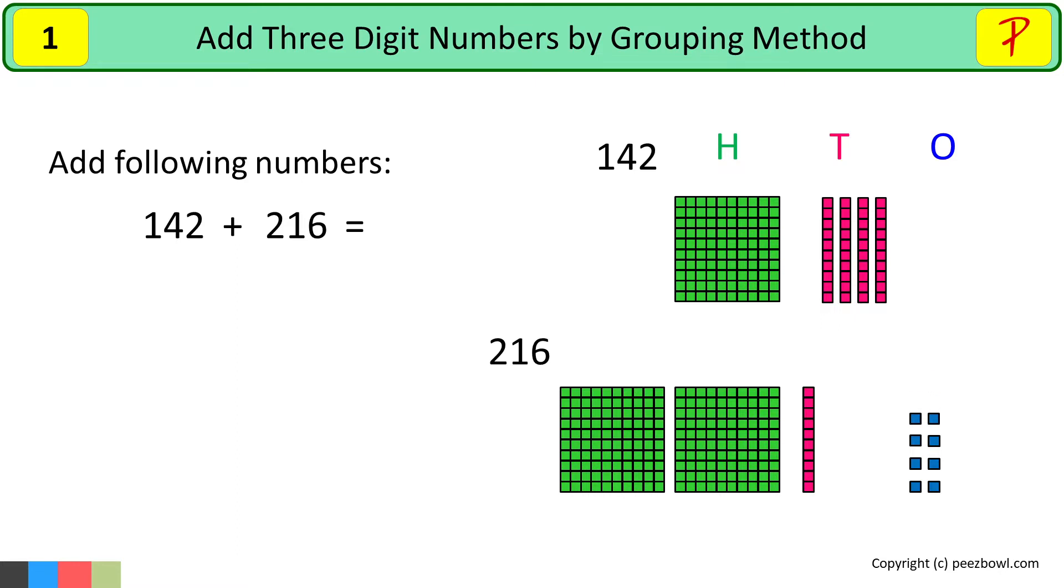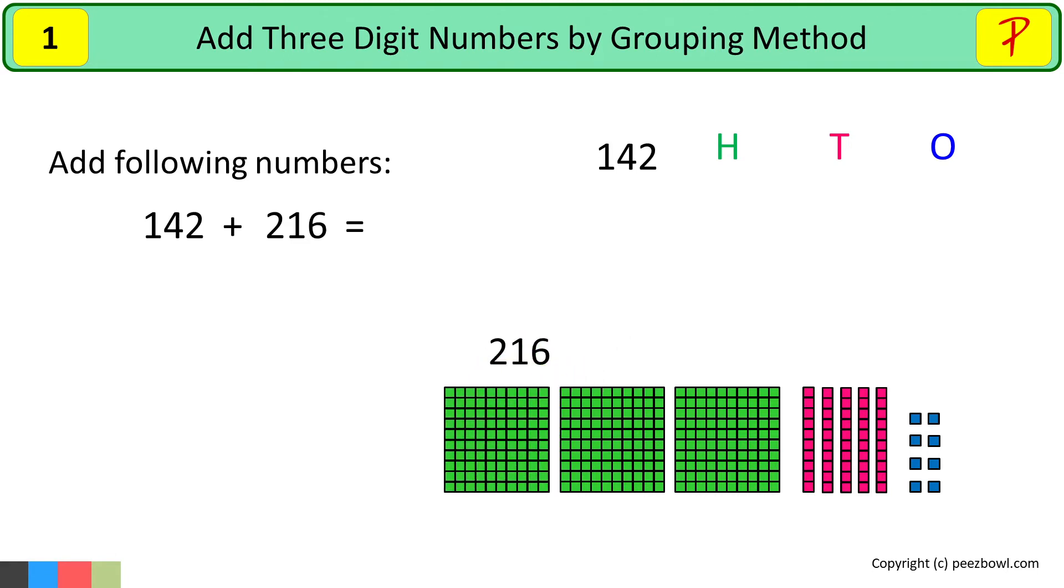For the tens place, we have four tens in 142. So for addition, I will bring four tens down with 216. And we are also going to do the same for the hundreds place as well. Here we have 100 in 142, I will bring it down with two hundreds in 216. Now it looks good.